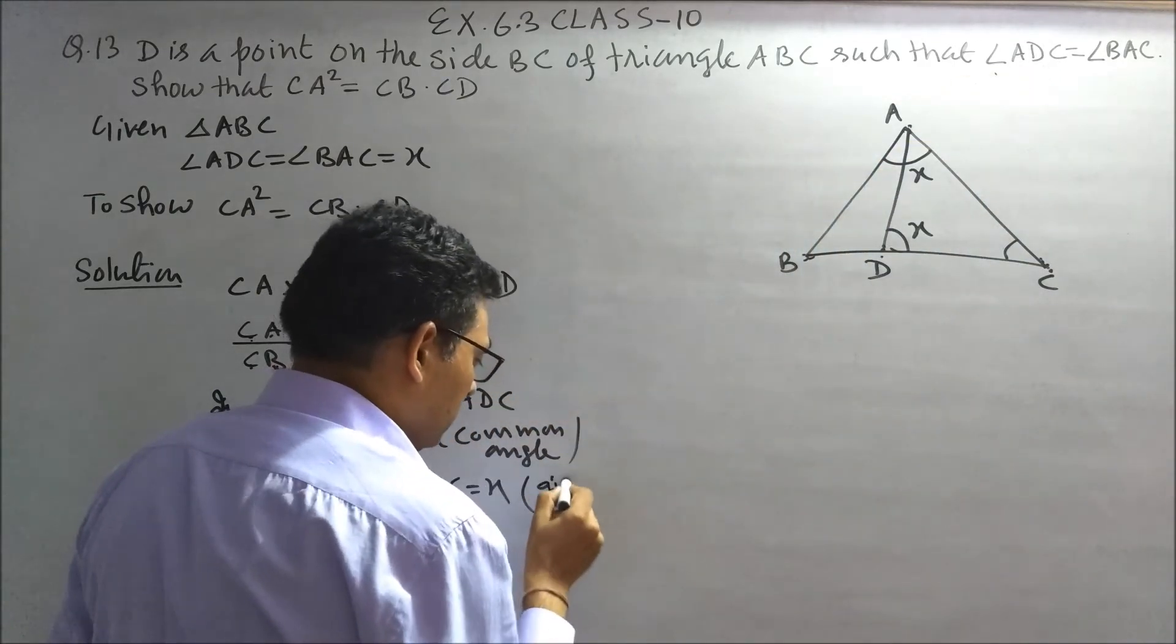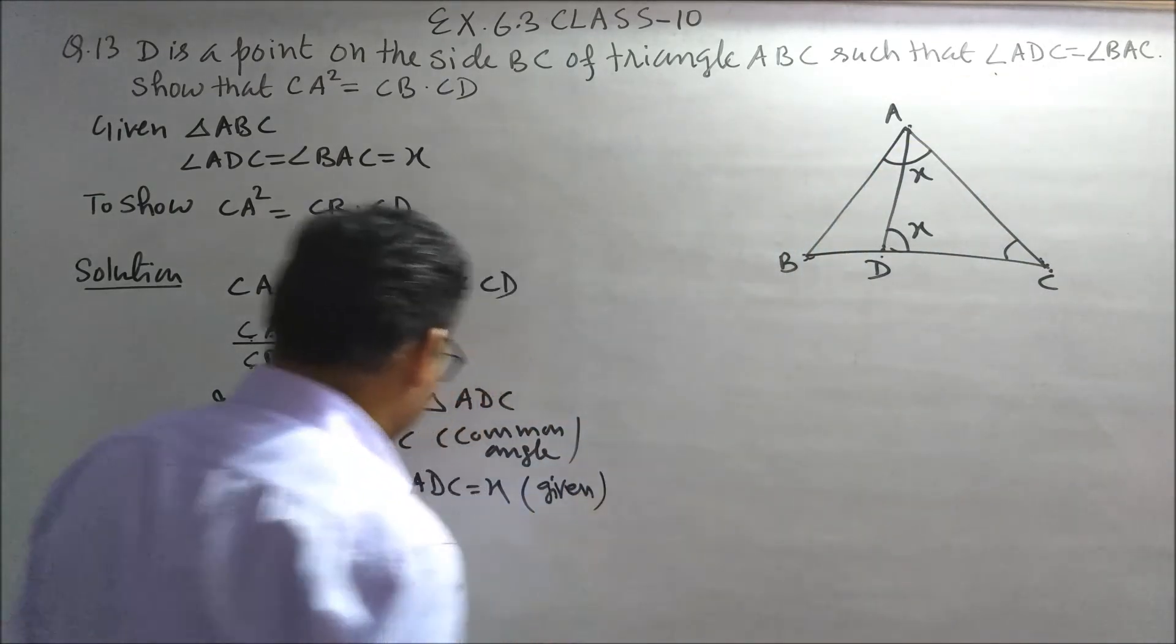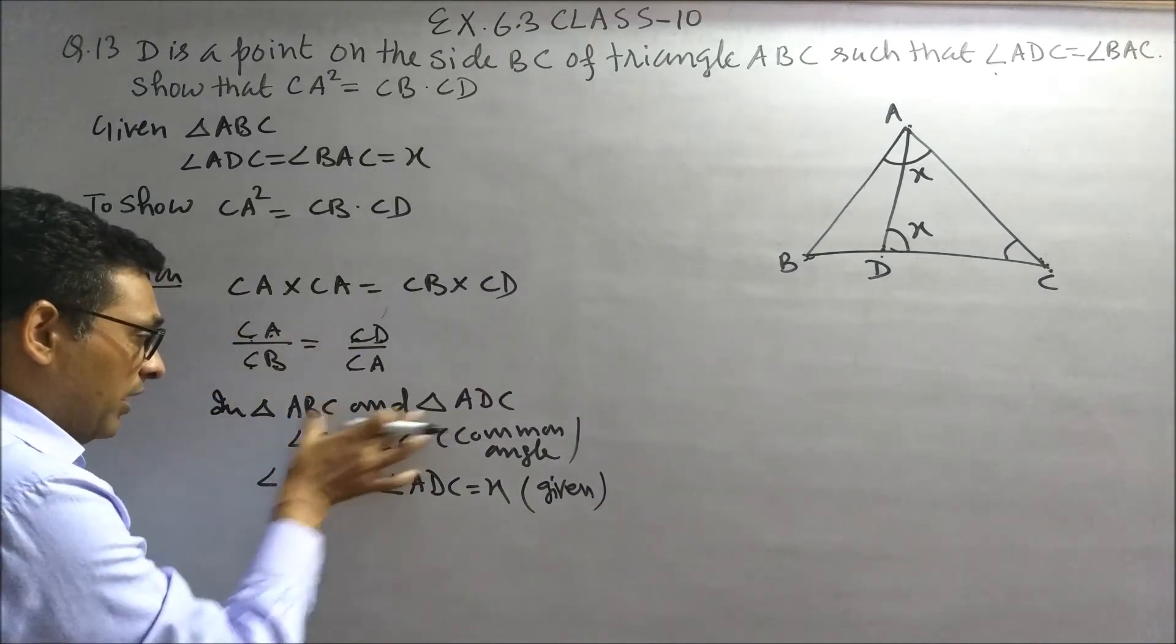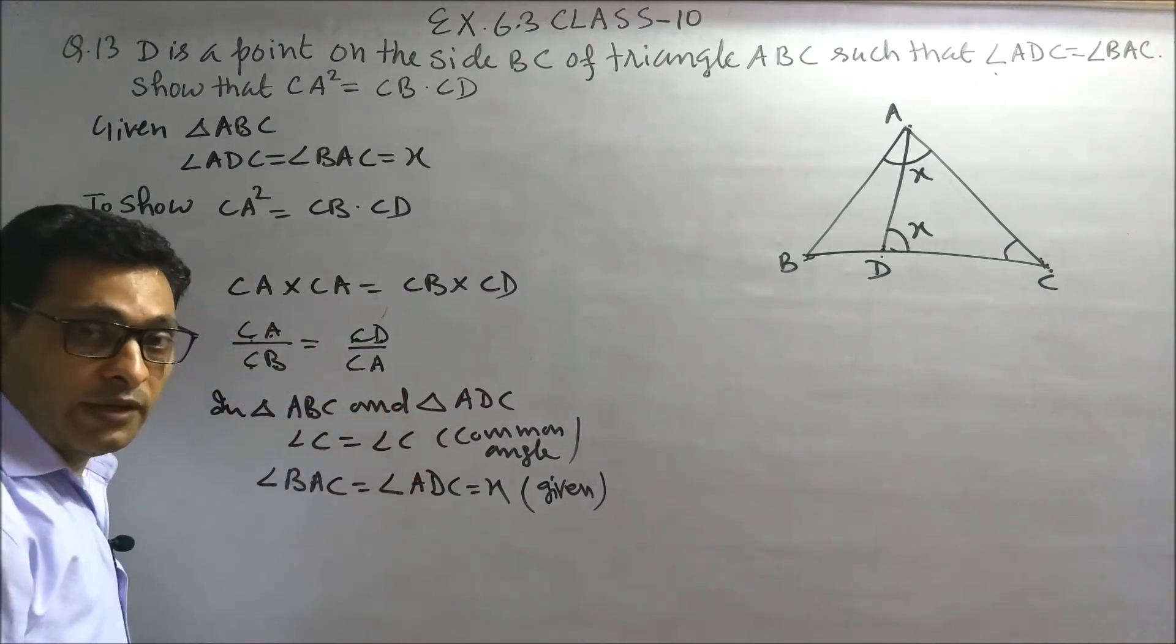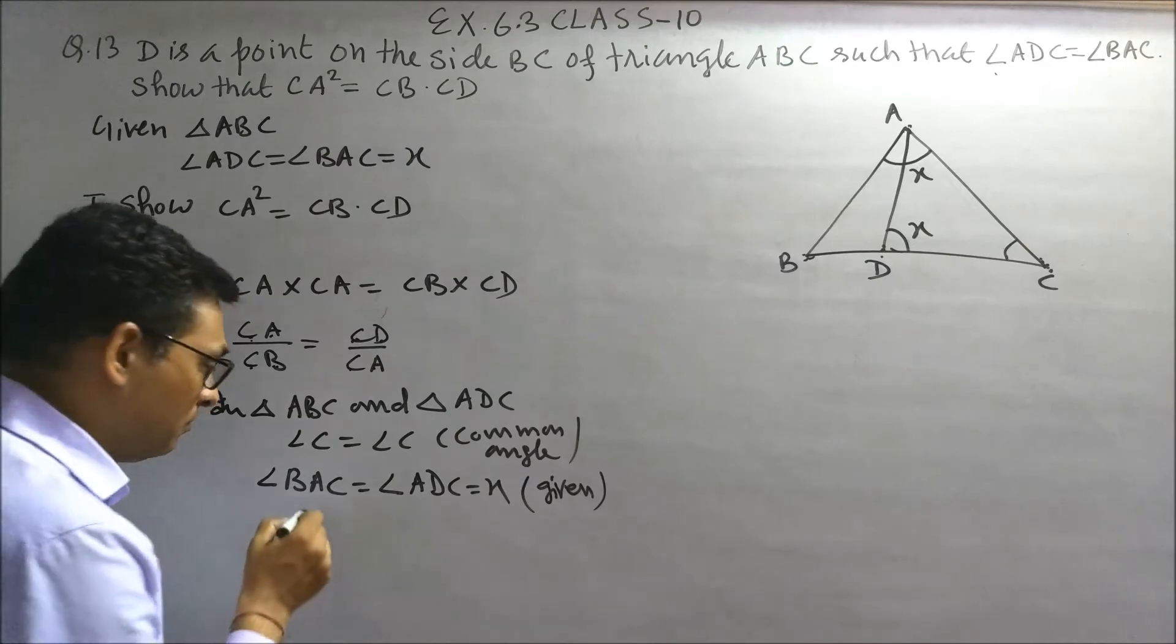It is given to us. It means both triangles are similar by AA criteria.